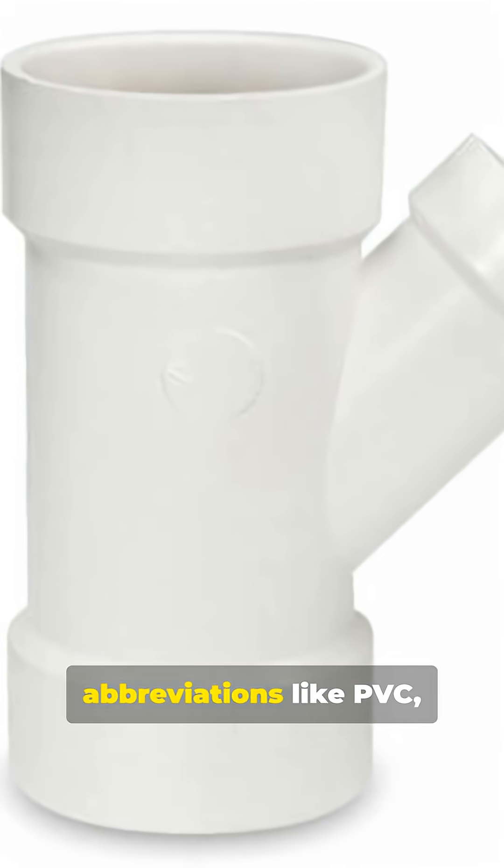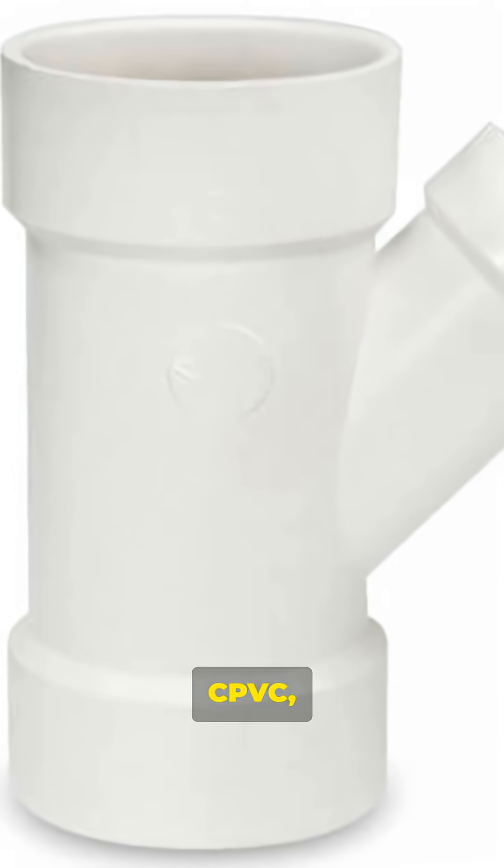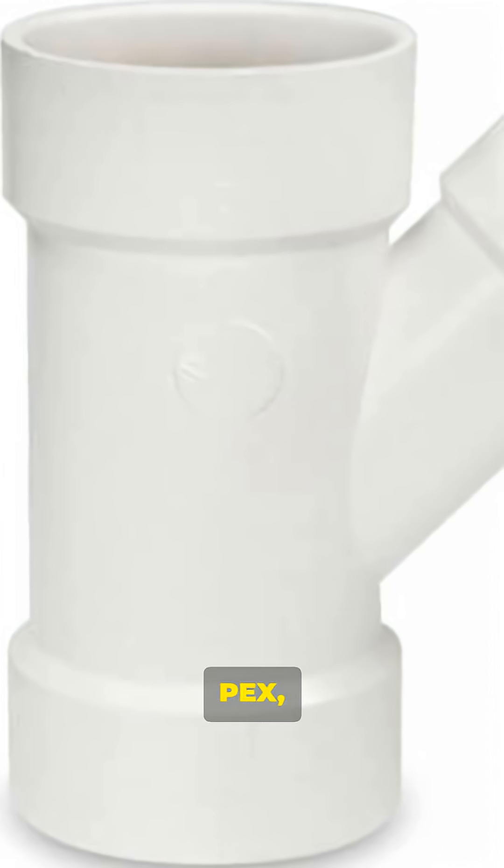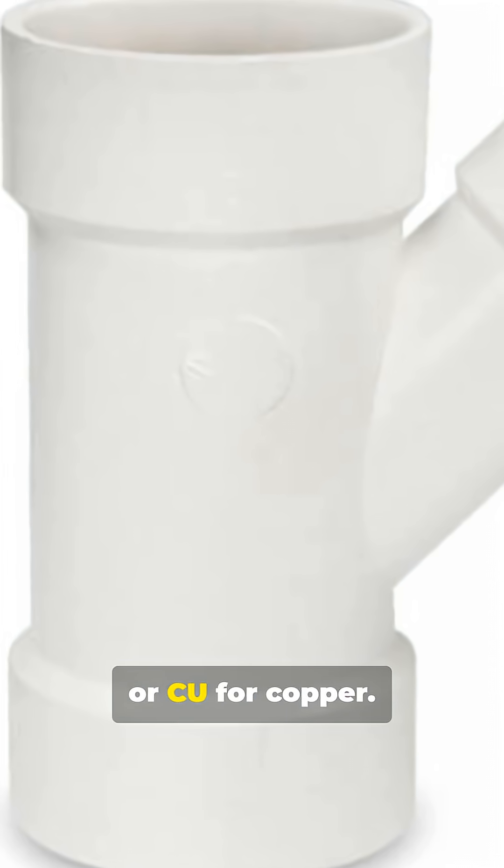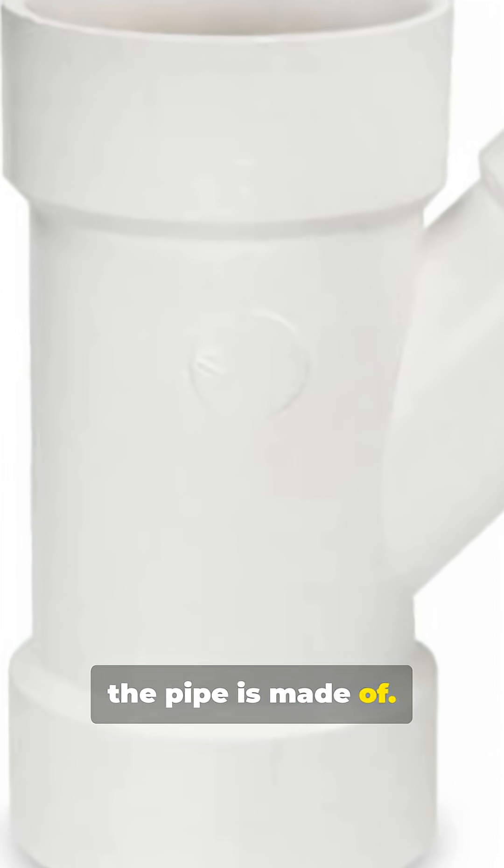Material type. You'll see abbreviations like PVC, CPVC, PEX, ABS, or CU for copper. That tells you what the pipe is made of.